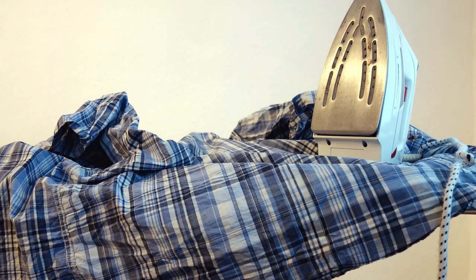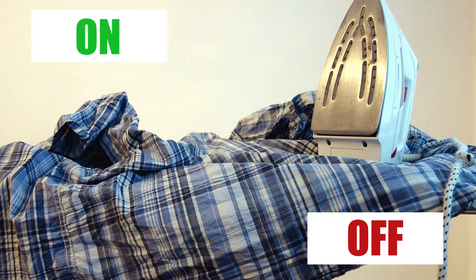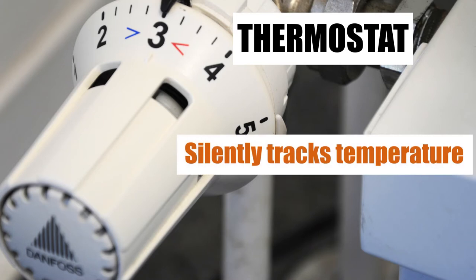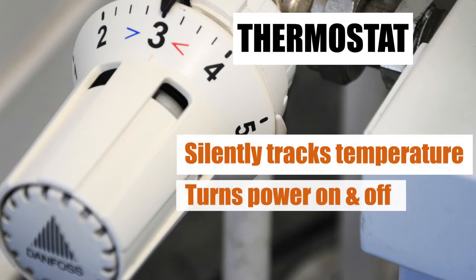You have likely observed this automatic on-off function on electric irons, but do you know how it works? It is the thermostat inside the iron that silently tracks the temperature and can turn the power on and off with the help of various other electric components.